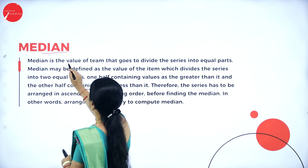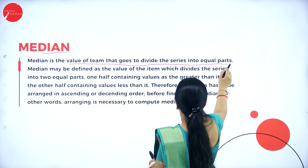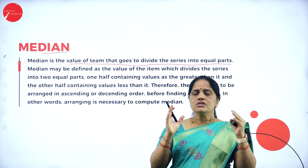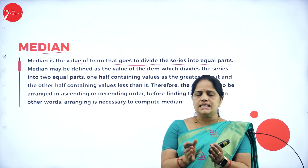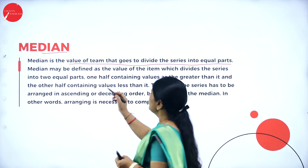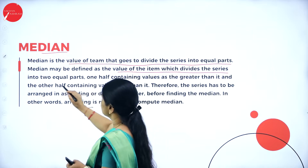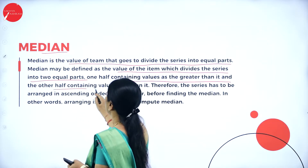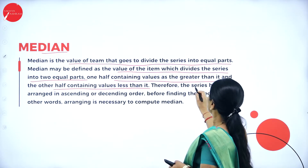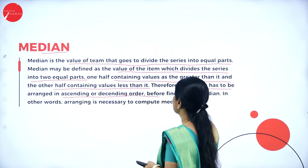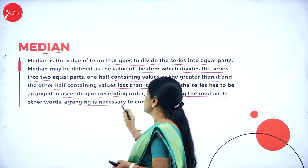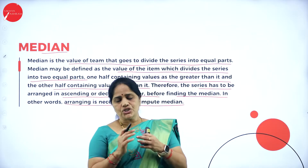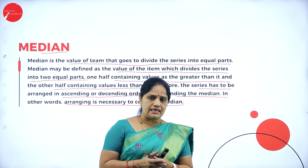So what is the median? Median is the value that divides the series into two equal parts. It is that value which is considered as the middle most value of the data. Median may be defined as the value of the item which divides the series into two equal parts — one half contains values greater than it, and the other half contains values less than it. Therefore, the series has to be arranged in ascending or descending order before finding the median. This is the first key point.